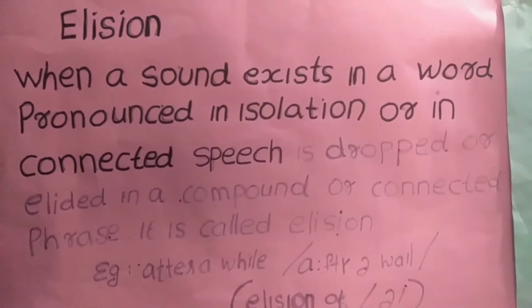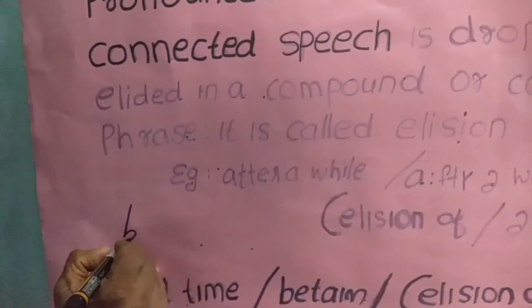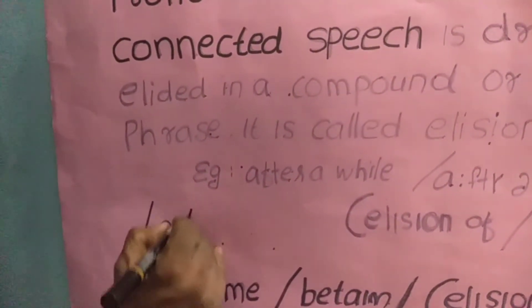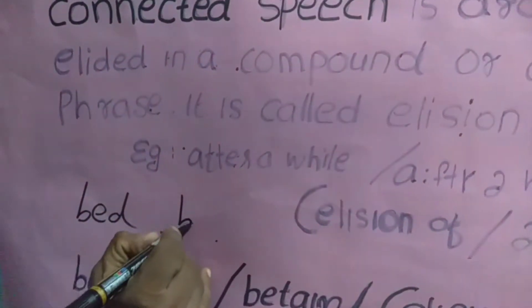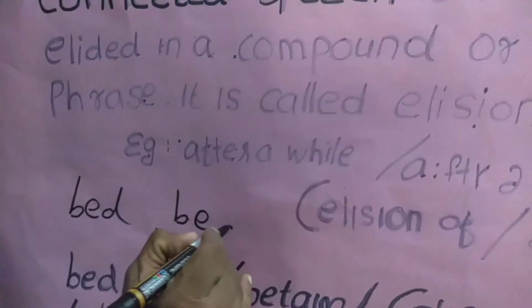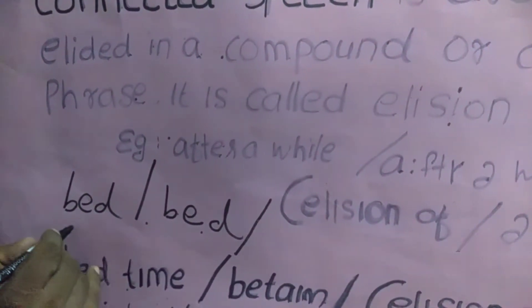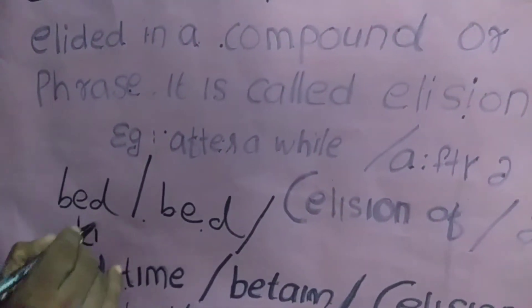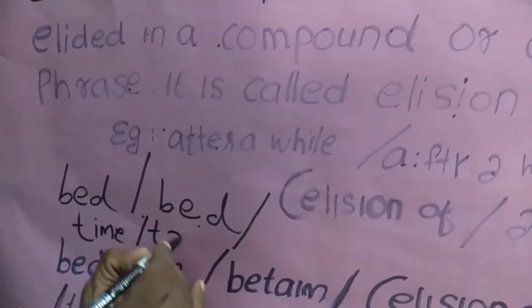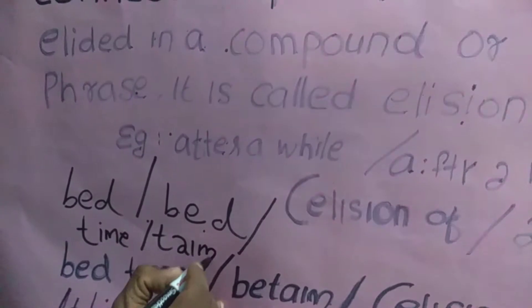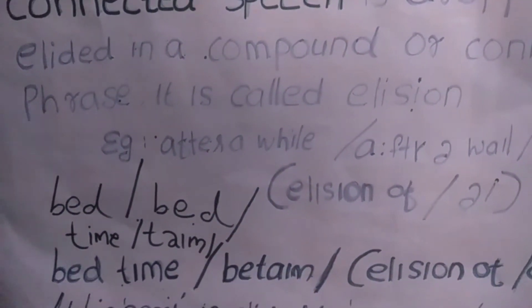That is, a sound that is dropped in normal connected speech. For example, let us look at the word 'bedtime.' We have the word 'time' — t-i-m-e. Then 'bed.' We can transcribe them and the term 'bedtime' shows the drop of a sound. That is elision.